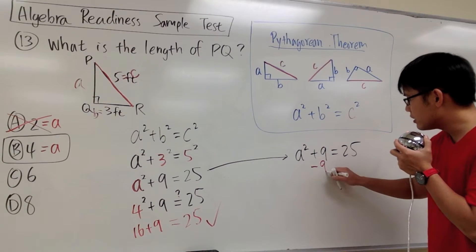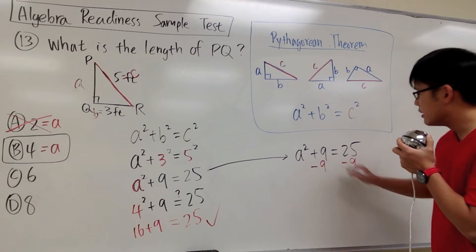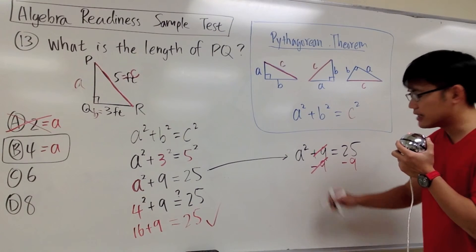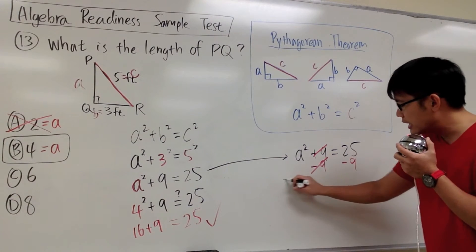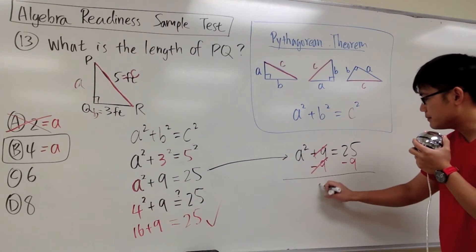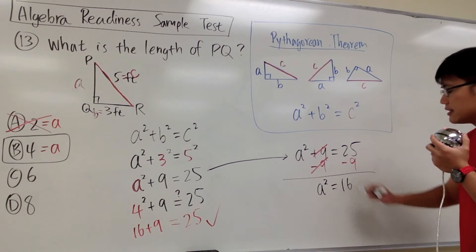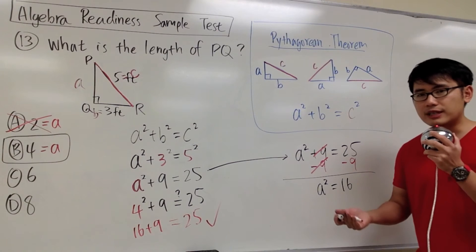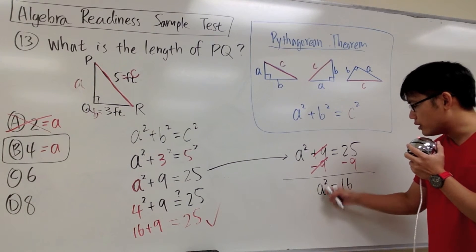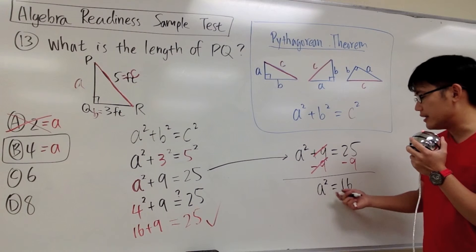The positive 9 minus 9, they will cancel out. Then we will have A squared, and that's equal to 25 minus 9, that's 16. And now you can just ask yourself, what number squared will give you 16? And the answer to that will be 4.